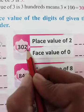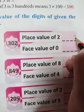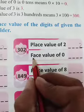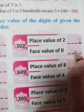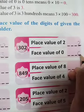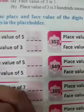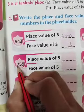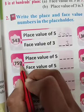Place value of 2 — here 2 is in the ones place, so its place value is 2. And the face value of zero — the face value is always the same as the digit itself. Now, for 759, the place value of 5 — where is 5? It's in the tens place.